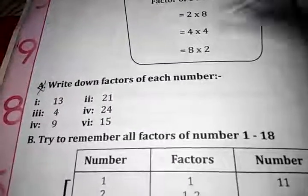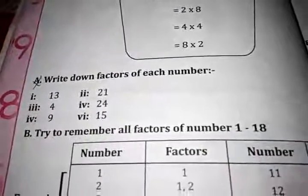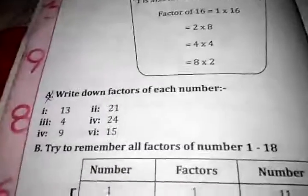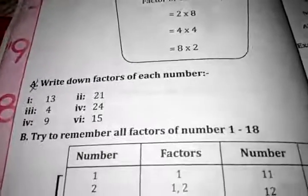Now students, question number A is write down factors of each number. We have to write the factors of 13, 21, 4, 24, 9, and 15.